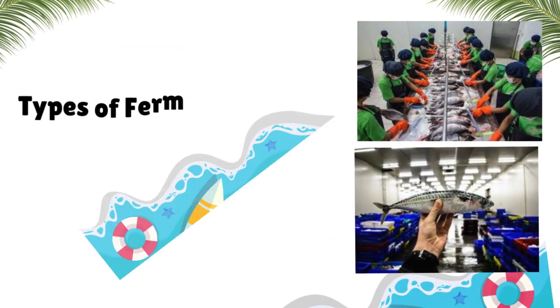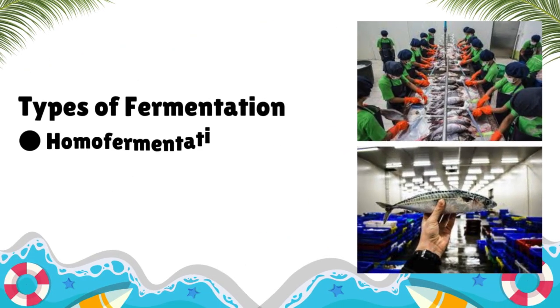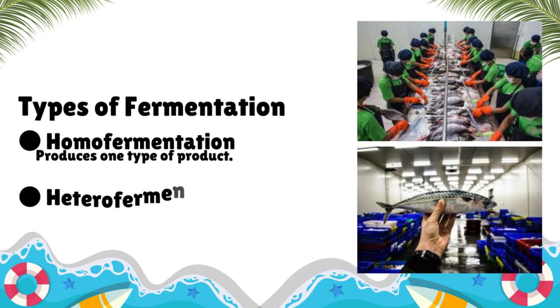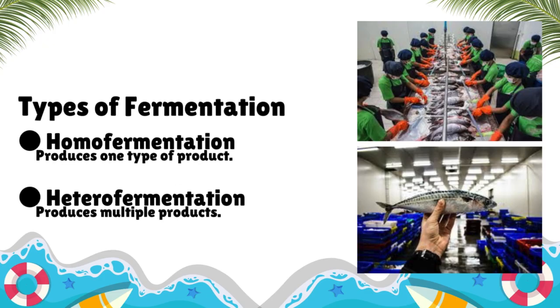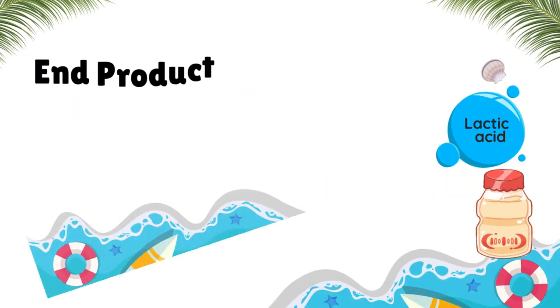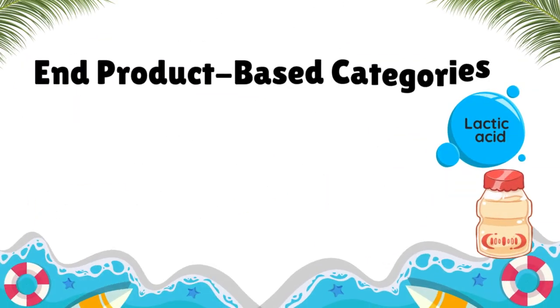Types of fermentation: Homofermentation produces one type of product. Heterofermentation produces multiple products, and there are also product-based categories.